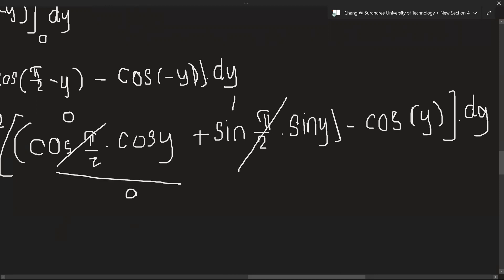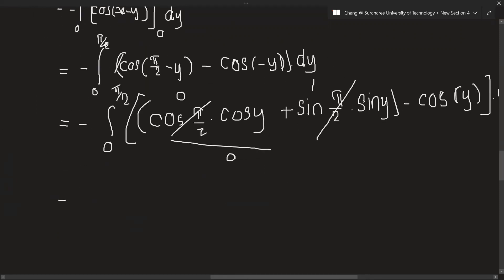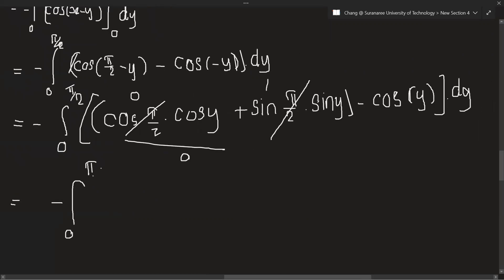Now I want sine y minus cos y. This is minus 2. OK. cos(phi over 2), phi over 2. Boss of sine y minus cos 1. Sine y minus cos y.